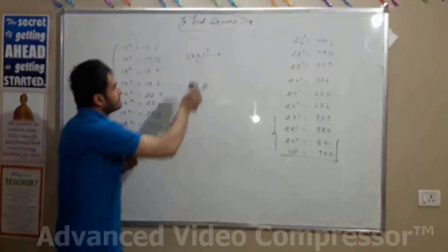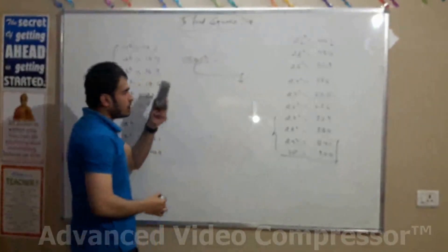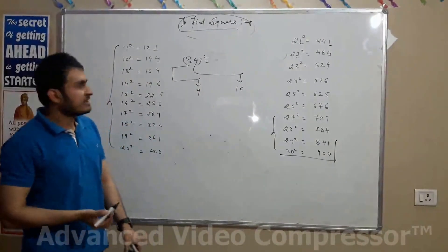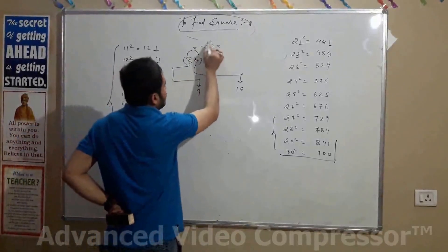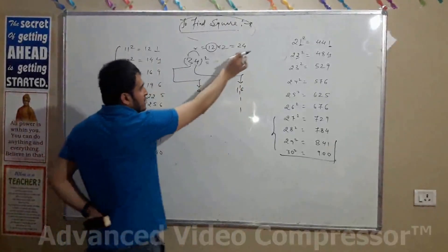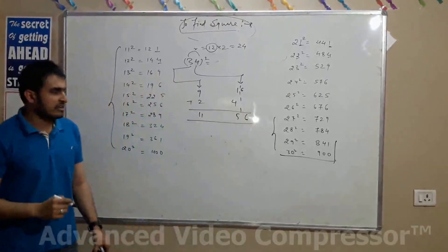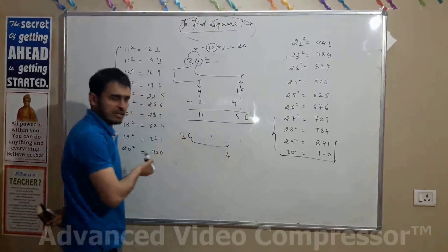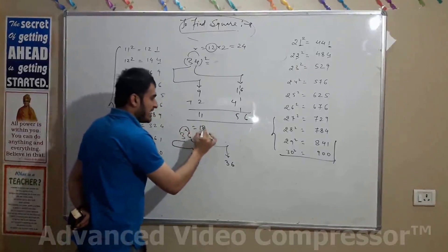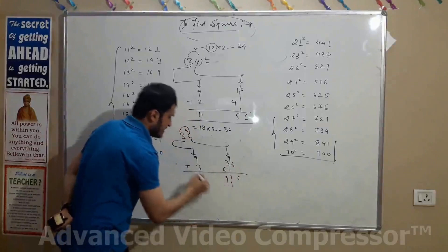Sorry for the confusion. For the next example: squaring the unit digit gives 4 (write 04). The tens digit is 3, so 3² = 9. Double the product of digits: 2 × (3 × 2) = 12. The answer is 1024.